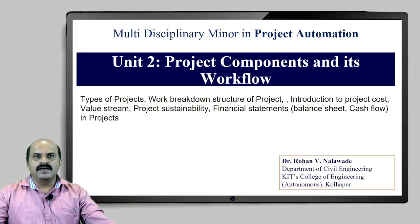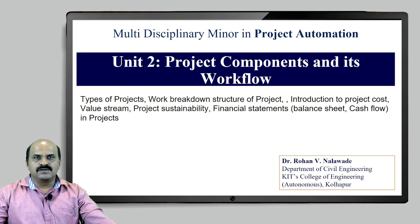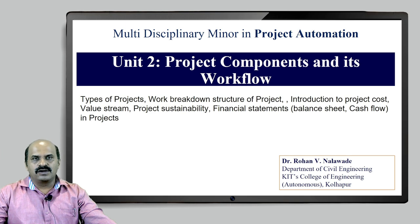Hello everyone. Today we are going to have a discussion on this multidisciplinary minor in project automation in Unit 2, which includes project components and its workflow. As you can see in the slide, the various content of this Unit 2 includes what are the various types of projects, work breakdown structure of the project, then we will be moving our attention to what are the various ways by which project cost is going to get computed. Then what do you mean by value stream, which is a very important part while deciding the automation strategy.